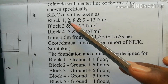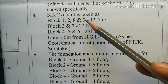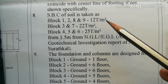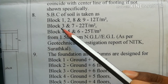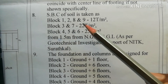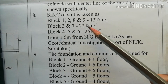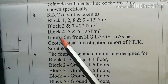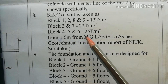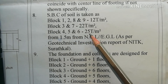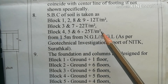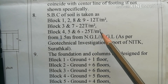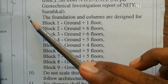To summarize the safe bearing capacities: Blocks 1, 2, 8, and 9 are 12 tons per meter square; Blocks 3 and 7 are 22 tons per meter square; Blocks 4, 5, and 6 are 25 tons per meter square.